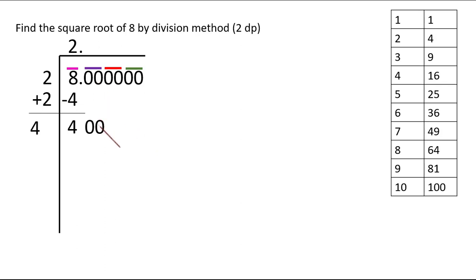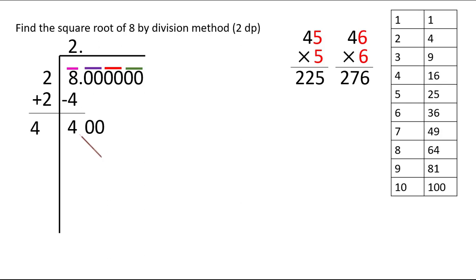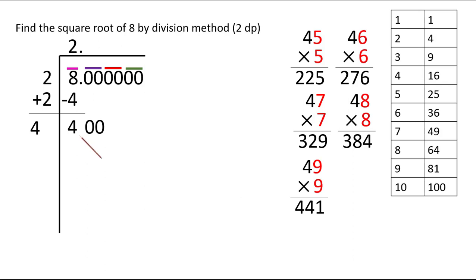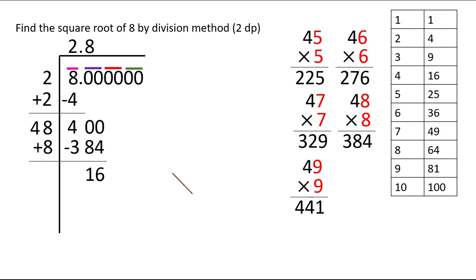Always bring numbers down in pairs. We need a digit after 4. Trying: 48×8=384, which is just less than 400. 49×9=441 is higher. So we go with 48×8=384. We write 8 above and multiply to get 384. Subtracting gives a remainder of 16. We add 8 to get 56, leaving some space.